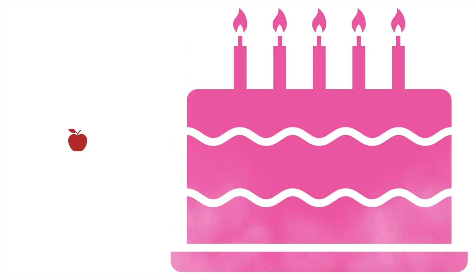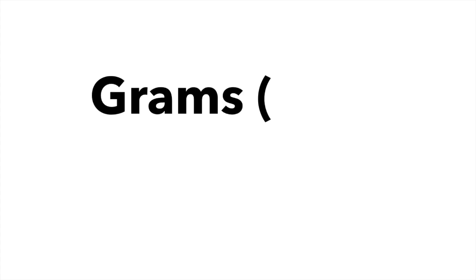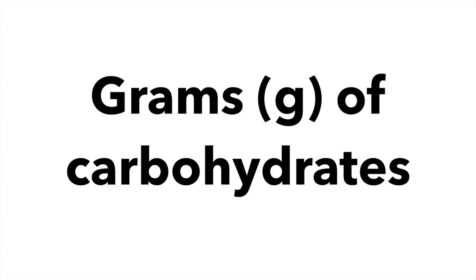If you have type 1 diabetes, before you eat you have to give insulin so your body can use the energy in the food. But how do you know how much insulin to give? Surely a small apple doesn't need the same amount of insulin as a large slice of cake. To determine how much insulin you need to dose with, you need to know how many grams of carbohydrates are in the food that you are eating.